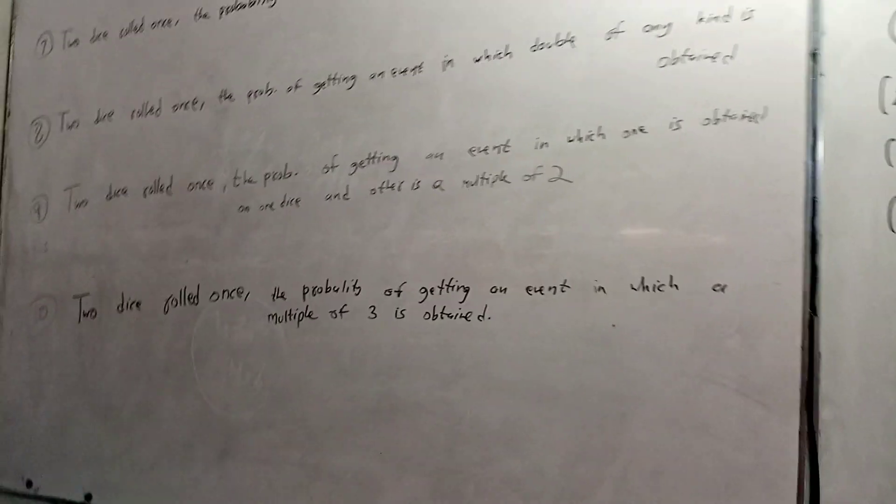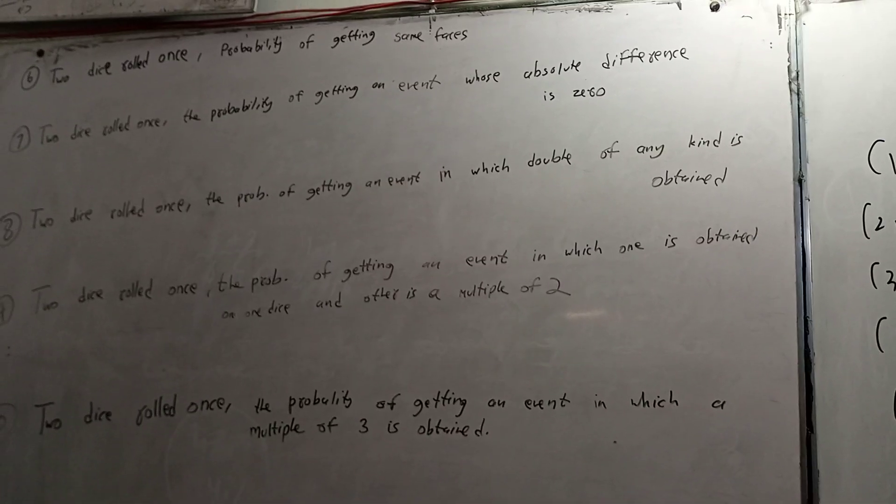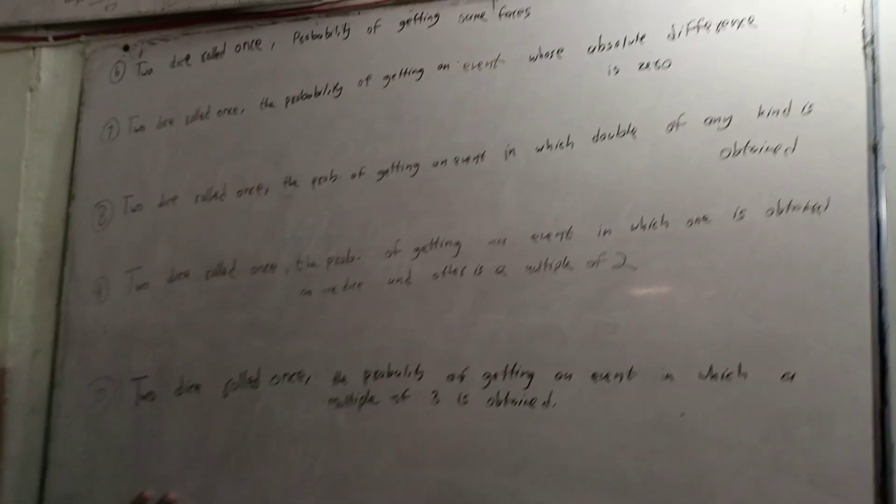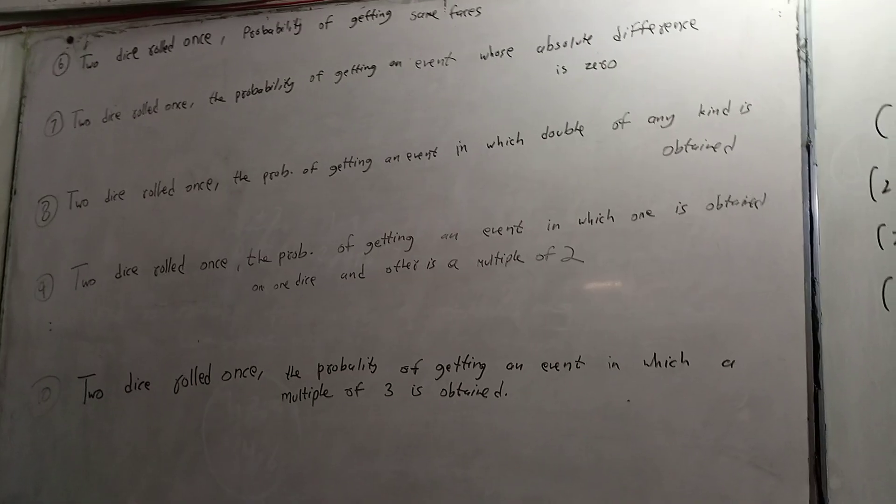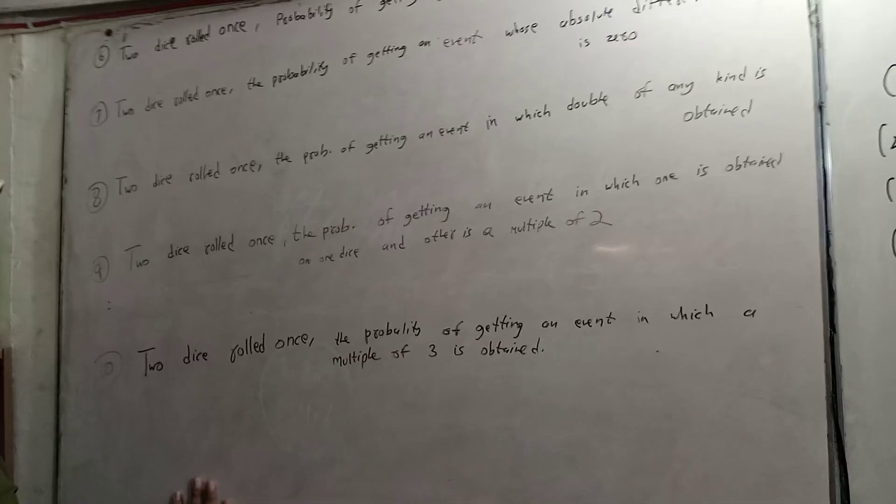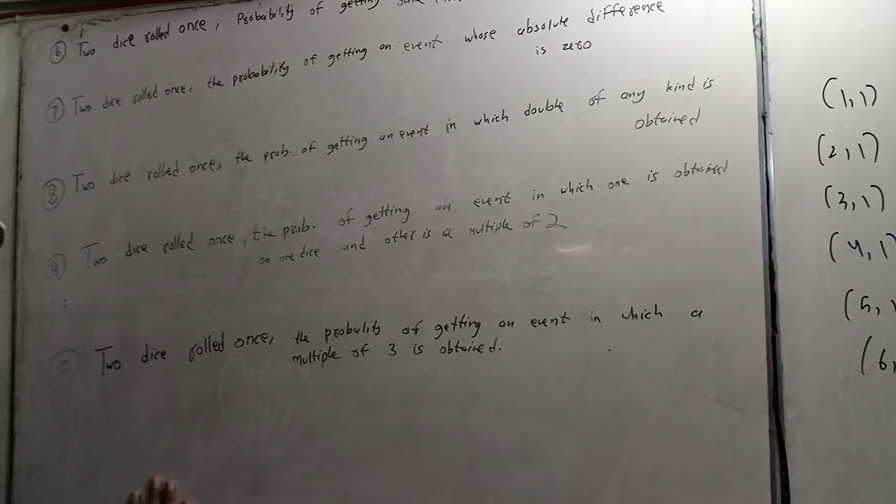See kids, we're talking about two dice rolled. First, probability of getting same faces. Two dice rolled, probability of getting any outcome whose absolute difference is zero. Two dice rolled, probability of getting an event in which double of any hand is obtained. Two dice rolled, probability of getting an event in which one is obtained on one die and the other is a multiple of two.